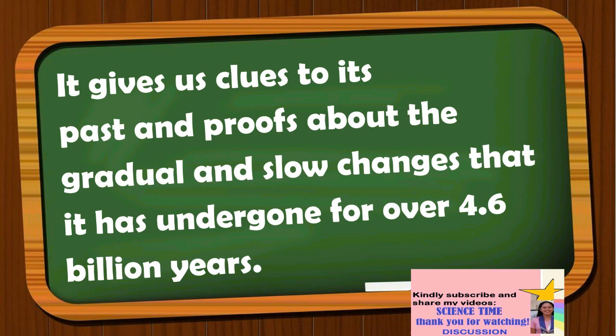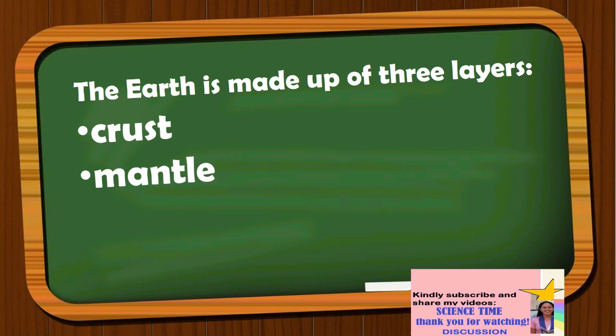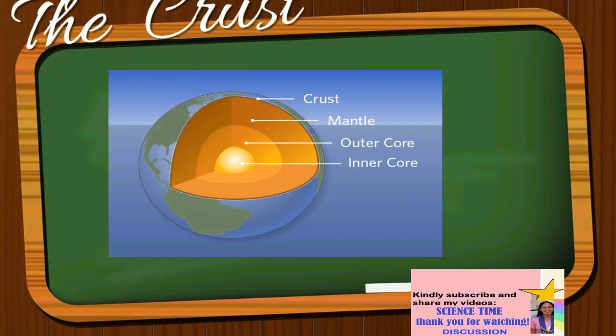The Earth is made up of three layers: the crust, the mantle, and the core. The study of these layers is mostly done in the Earth's crust, since mechanical probes are impossible due to the tremendous heat and very high pressure underneath the Earth's surface.